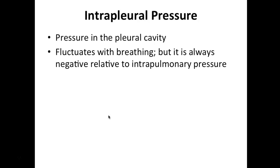Intrapleural pressure is the pressure in the pleural cavity — the cavity that surrounds your lungs, like saran wrap-like sheets. It also fluctuates with breathing, but it is always negative relative to intrapulmonary pressure. This makes sense: if the pressure surrounding your lungs were higher than the pressure inside your lungs, it would cause your lungs to collapse.